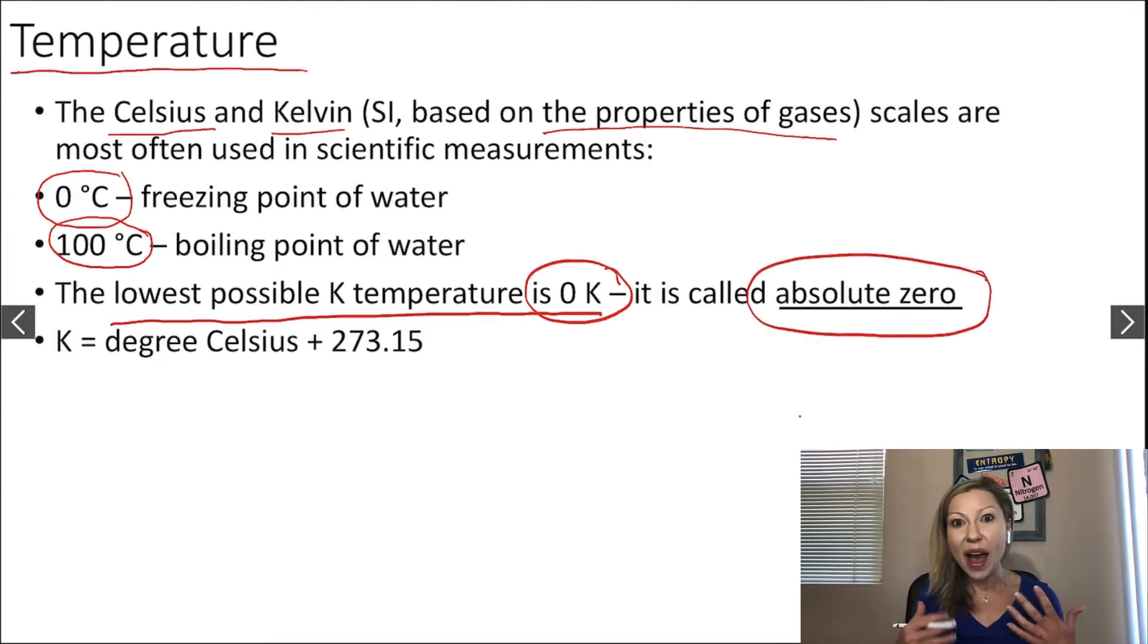You also have to know that we can never achieve this temperature experimentally. It's really interesting. At zero Kelvin, all the molecules and atoms basically stop moving. When I think about zero Kelvin temperature or absolute zero, I imagine the Flash, the fastest man alive, running really fast and everything is just still around him. That is kind of absolute zero.